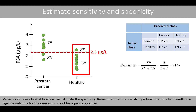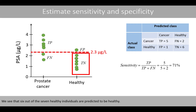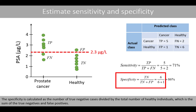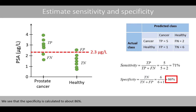We'll now have a look at how to calculate the specificity. Remember that the specificity is how often the test results in a negative outcome for the ones who do not have prostate cancer. We see that six out of the seven healthy individuals are predicted to be healthy. The specificity is calculated as the number of true negatives divided by the total number of healthy individuals, which is the sum of the true negatives and false positives. The specificity is calculated to about 86%.